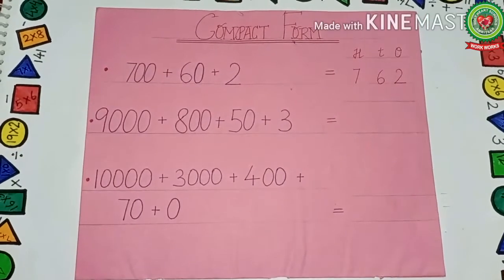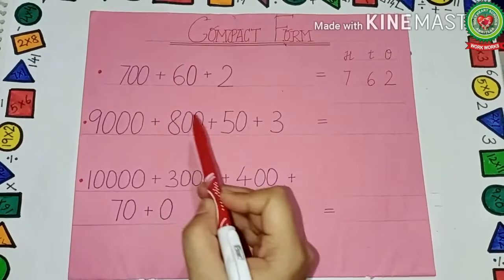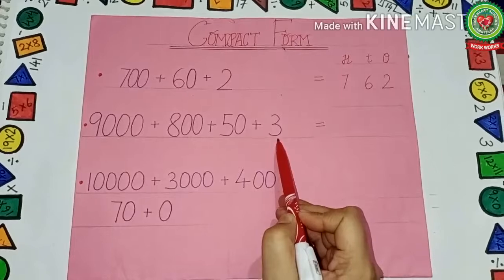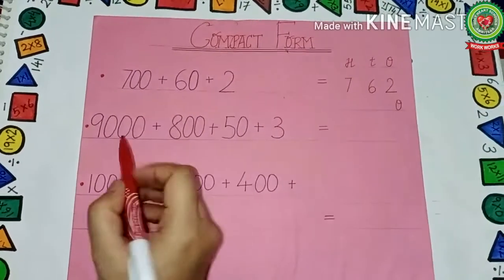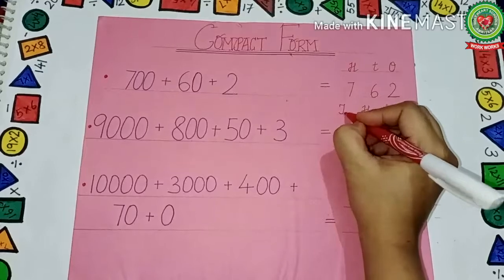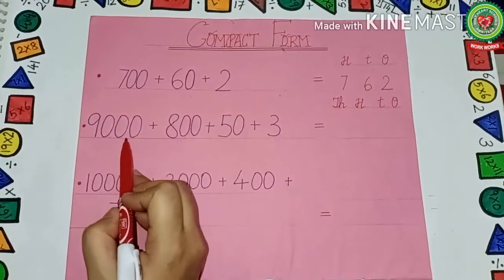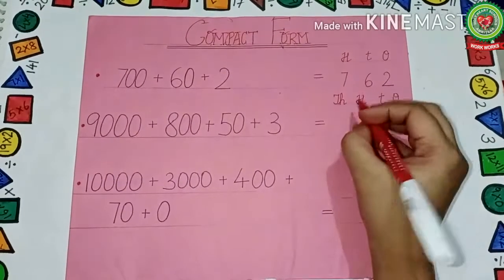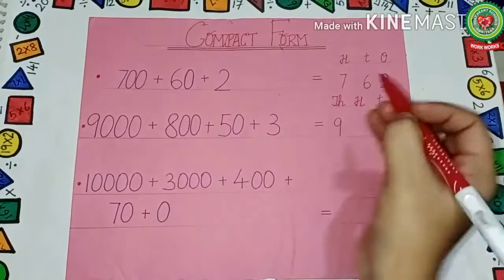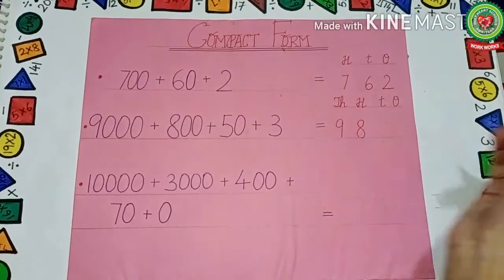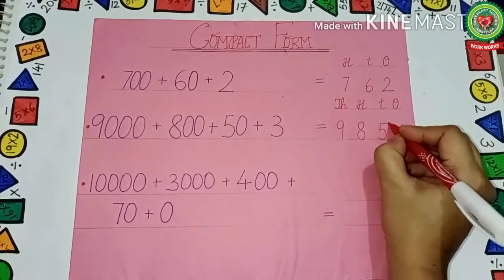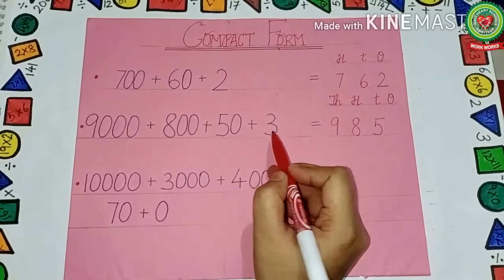Now see the next number: nine thousand plus eight hundred plus fifty plus three. Again we write the place value table up to thousands — ones, tens, hundreds, and thousands. Nine with three zeros means nine thousand, so nine goes under thousands. Eight with two zeros means eight hundred, so eight goes under hundreds. Five with one zero means fifty, so five goes under tens. Three with no zeros goes under ones. The short form is nine thousand eight hundred fifty-three.